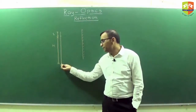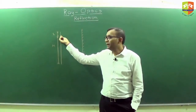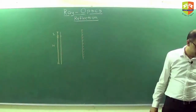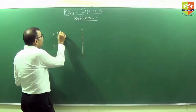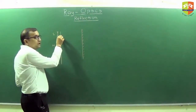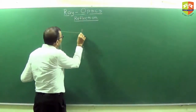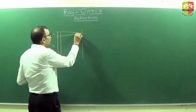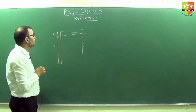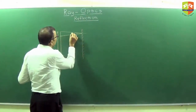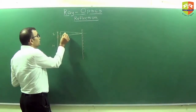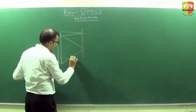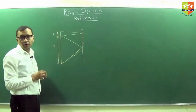The hint is: the light from the feet after reflection should reach the eye, and light from the head after reflection should reach the eye — the middle point will automatically be covered. So, light from the head, if it has to reach the eye, it should form an isosceles angle. If you draw a normal, this angle will be equal to that angle. This will be a side bisector — this normal. Similarly, light from the feet has to reach the eye.